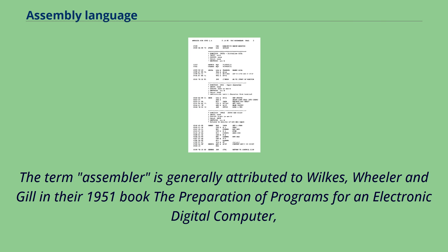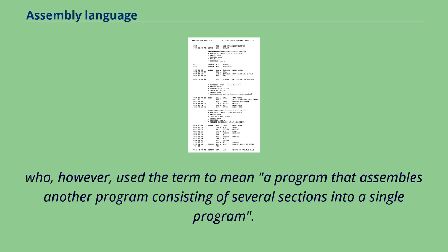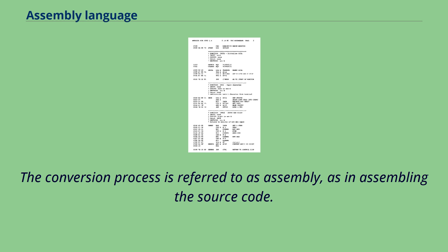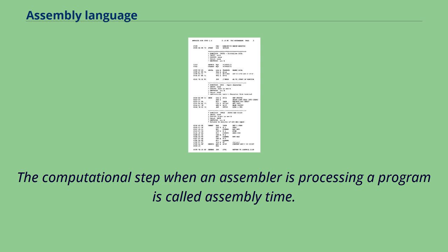The term assembler is generally attributed to Wilkes, Wheeler and Gill in their 1951 book The Preparation of Programs for an Electronic Digital Computer, who, however, used the term to mean a program that assembles another program consisting of several sections into a single program. The conversion process is referred to as assembly, as in assembling the source code.